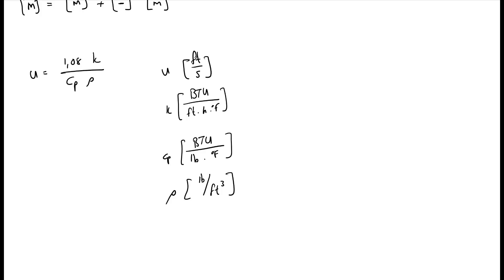I also then said to you, now what if I was given k in SI units, which would be watt per meter Kelvin, and my cp in SI units, which would be kilojoule per kilogram Kelvin, and density also in SI units, which would be kilogram per cubic meter. Can I now calculate my velocity in meters per second? And the answer is yes, but via a long way.